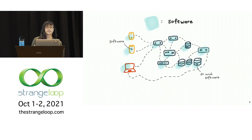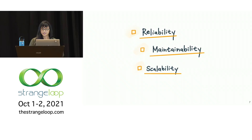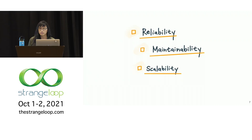That's difficult. Internet-based software is inherently distributed, and distributed systems are difficult to design, build, understand, and operate. But it is totally manageable if we understand the constraints of this context, if we build the tools to make this tractable, and if we build the ways of reasoning to make this context feel natural.